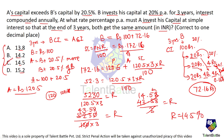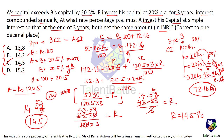Option comes out to be option C. Even if you try to do this on a calculator, you'll get something like 14.46 or 14.47, which when rounded off comes out to be 14.5. It is closer to 14.5 than 14.2, so we choose 14.5 as the answer.